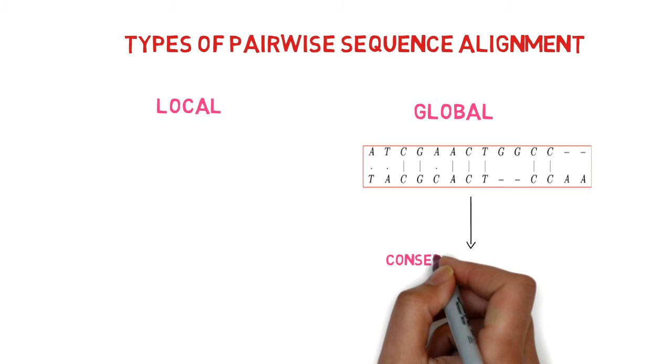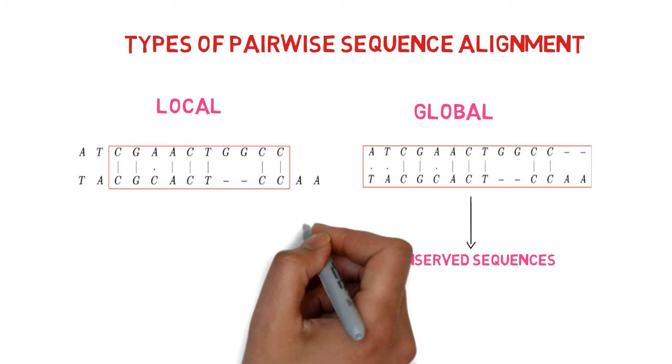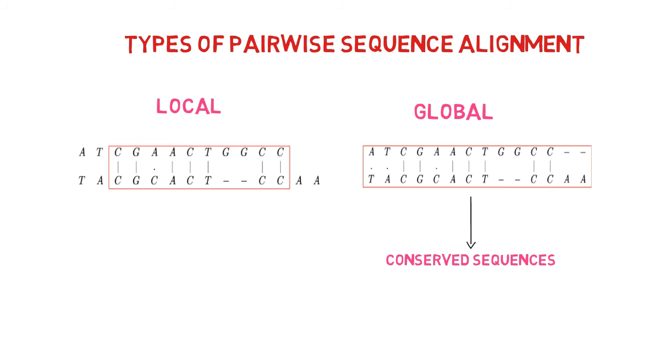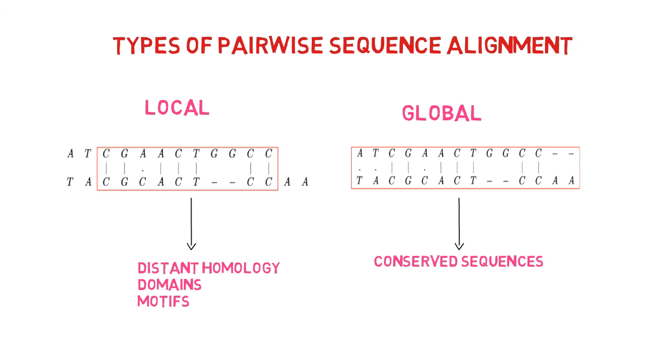It is used to identify conserved sequences. By excluding less similar regions, local alignment identifies the area of the sequences with the greatest degree of similarity. It is used to identify distant homology and discover related domains and motifs.